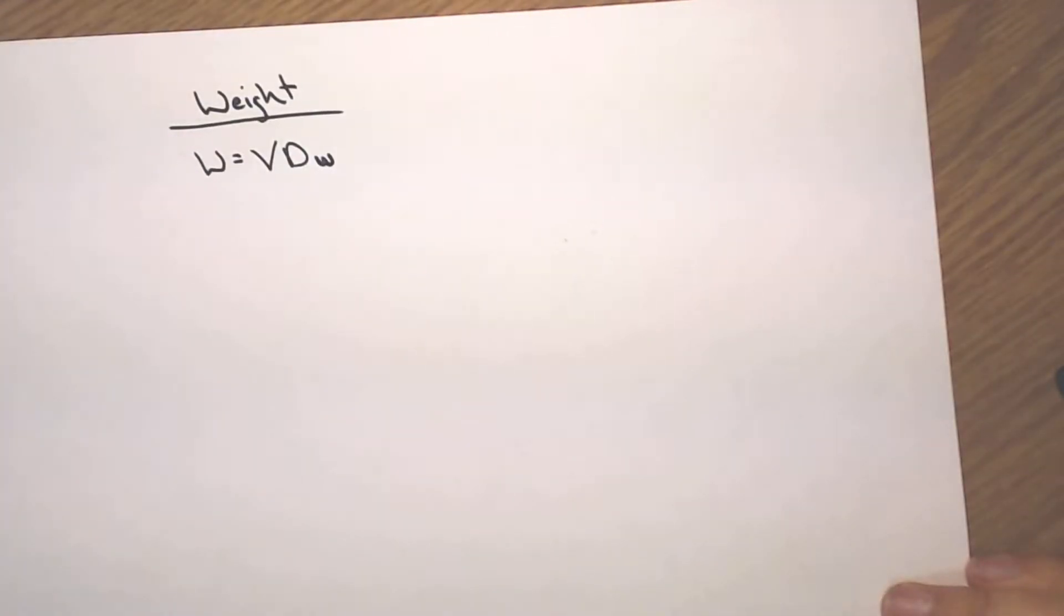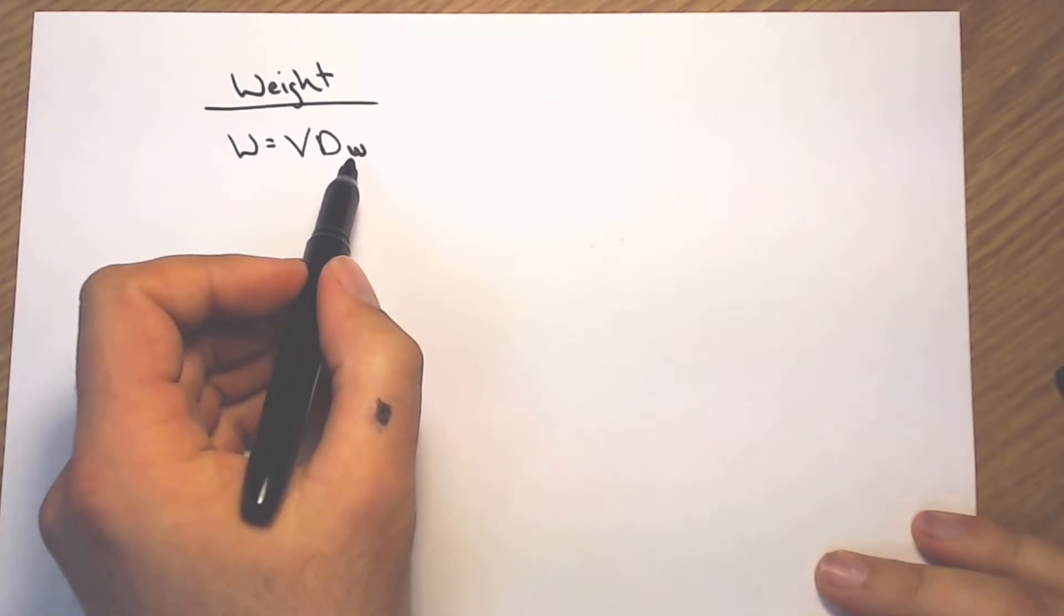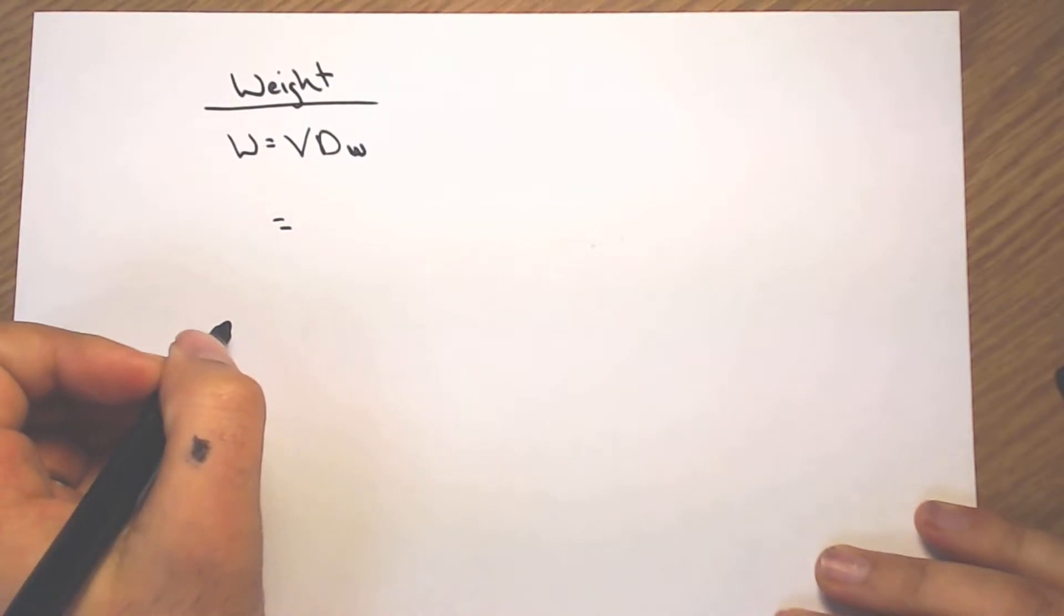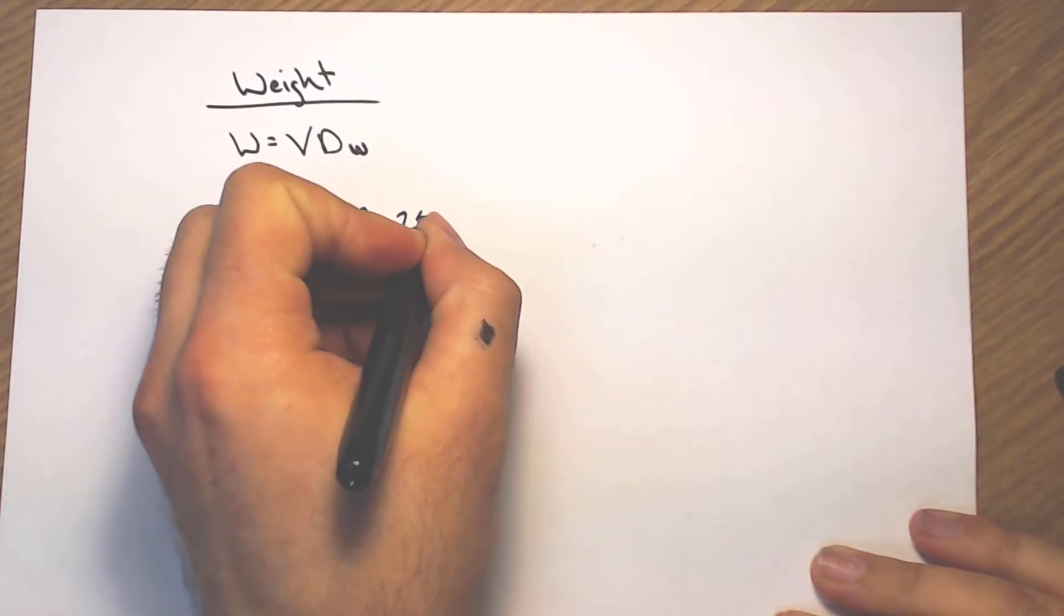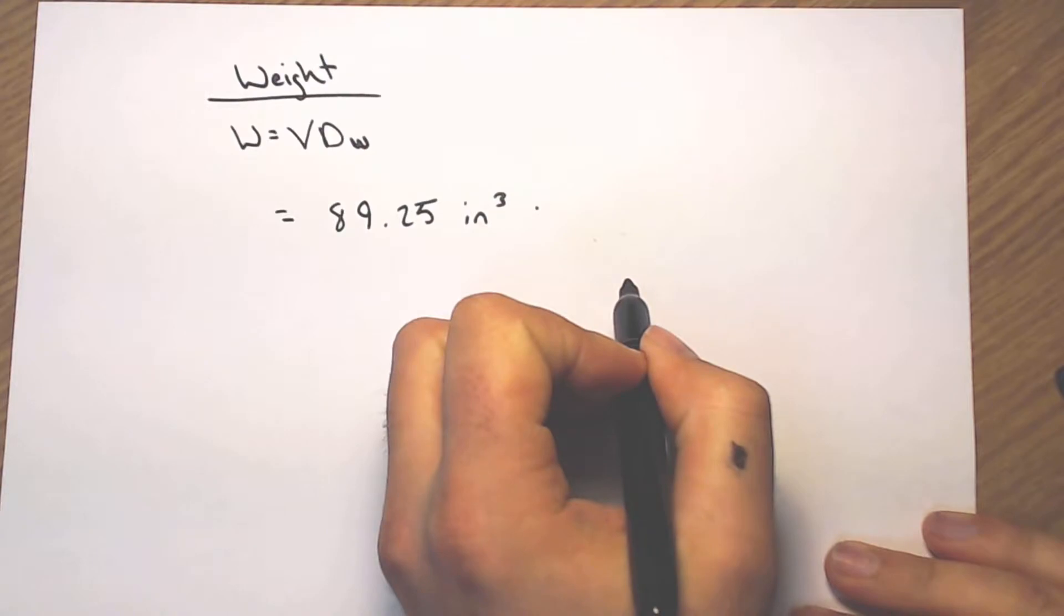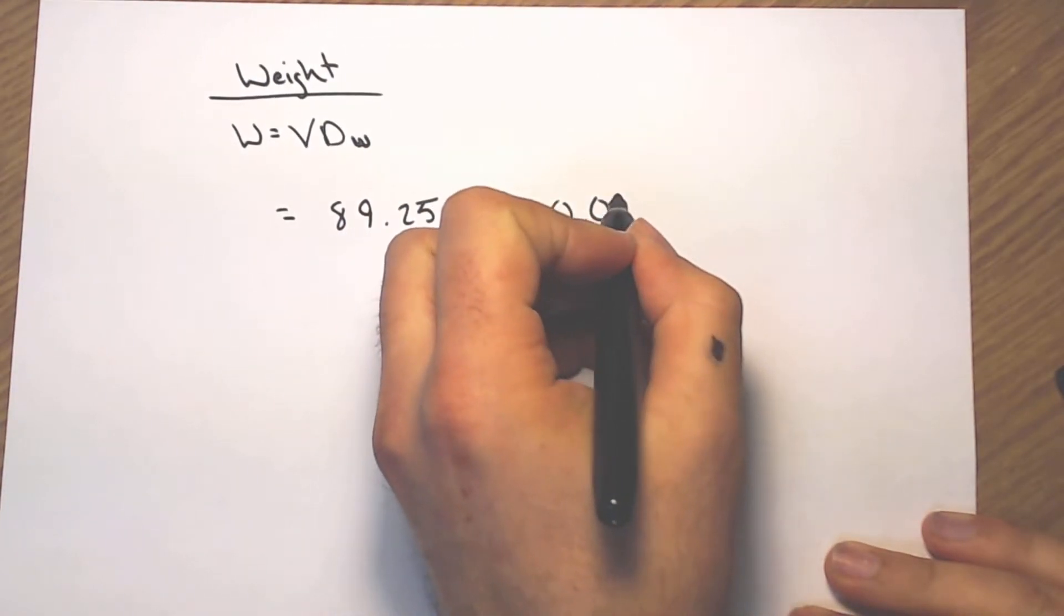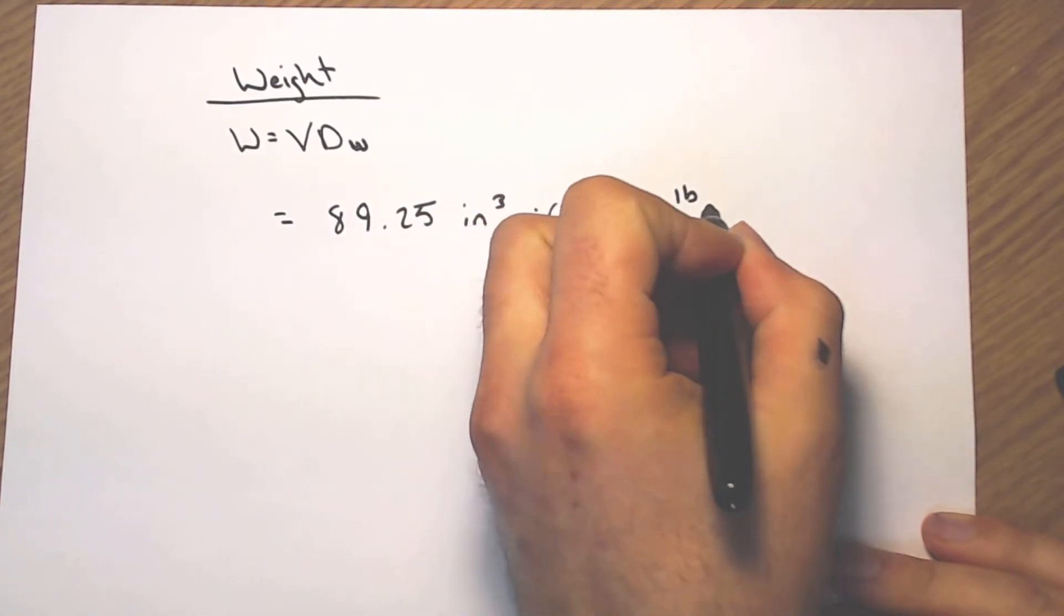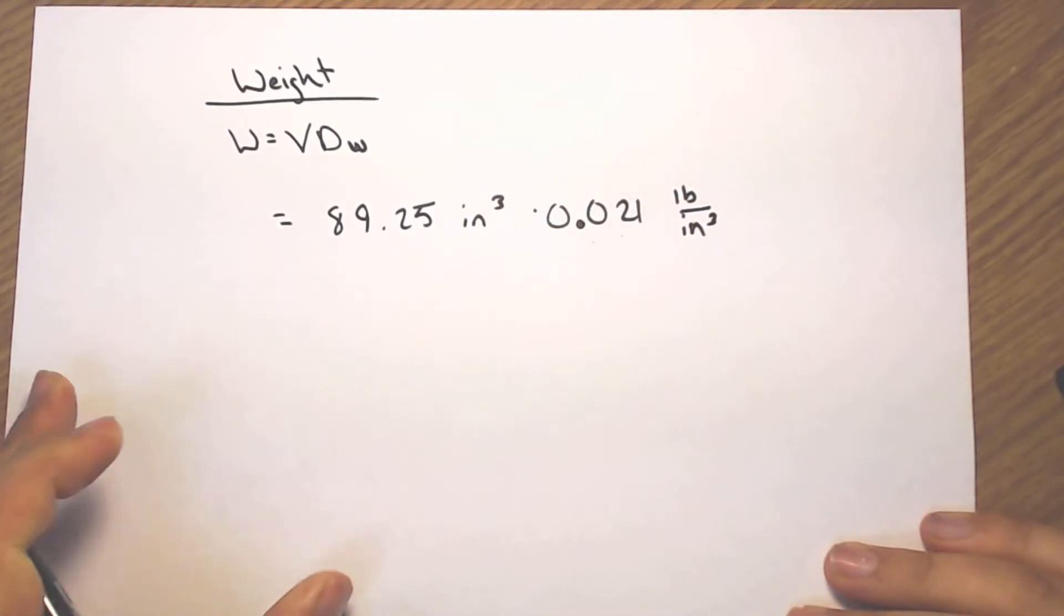Let's move on to weight. Finding the weight as volume times weight density. I found the volume in the first thing we did, and that was 89.25 cubic inches. I now multiply that by the weight density that was given to us. And if it's not, that's usually something you can look up in a table somewhere, or if it's a product that somebody shipped to you, it would be stated on that document somewhere.